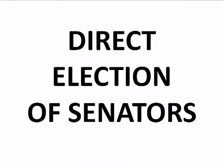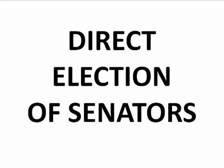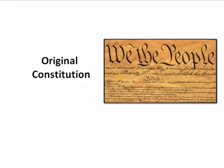Now let's move on to direct election of senators. The real question is: who elects the United States senator? We have two in Georgia. The 17th Amendment is going to change this process. In the original Constitution — because amendment means change, so the 17th Amendment is the 17th change to the Constitution — the original Constitution specified who chooses those senators.